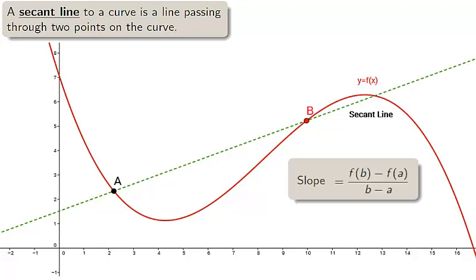Note that the slope of the secant line is the change in Y, F of B minus F of A, over the change in X, B minus A. This will become very important later in the chapter.